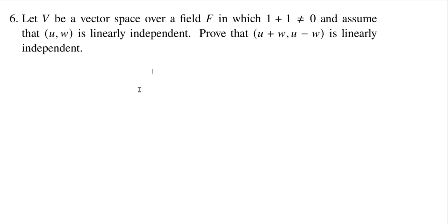And we're going to assume that (u, w) is linearly independent. So last time we assumed that u and w spanned the vector space V, now we assume it's linearly independent. And we want to prove that this same kind of modified list, u plus w, u minus w, is also linearly independent.